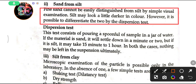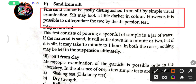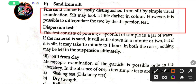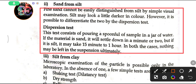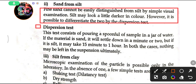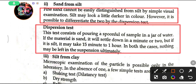The silt may look a little darker in color. However, it is possible to differentiate the two by a dispersion test. This test consists of pouring a spoonful of sample in a jar of water.